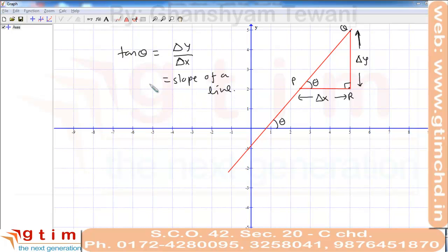Geometrically, slope is defined as the ratio of rise divided by run between two points P and R. It is like when we are moving from point P to Q: on the horizontal plane we have movement from P to R, and we get the rise from R to Q. So slope of the line is defined as rise upon run. Slope is sometimes expressed by the symbol M.